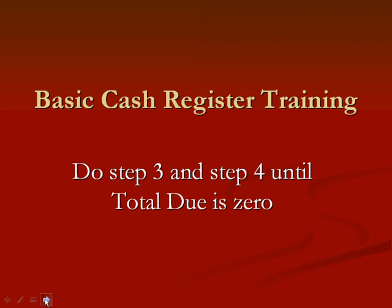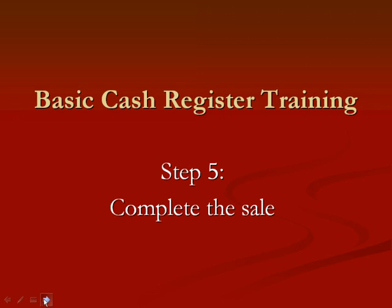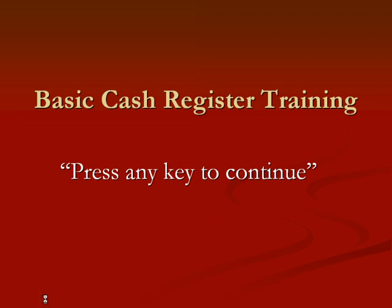Some people want to pay with multiple tenders — paying for some of it with cash and some with credit card, or any other variation. You want to repeat steps three and four until the total due is zero. Step number five: complete the sale. The complete dialog box will appear and you need to select it. Once you do that, you're going to see a message that says press any key to continue. We're keeping the transaction on the screen for as long as you need — if you need to make change or talk to the customer about the transaction, it's still on the screen. Press any key to continue and the screen will clear.